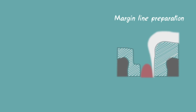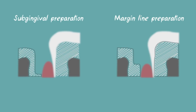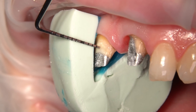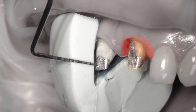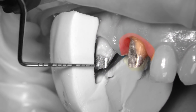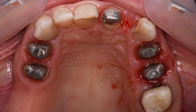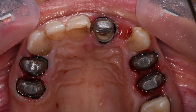Gum retraction is required when the tooth preparation is on the margin line or in the subgingival zone. The subgingival location of the preparation margin may be due to deep destruction of the tooth, or the alteration of crowns made by old-school dentists who believe in subgingival preparation without a chamfer, or underestimate the role of gingival retraction.